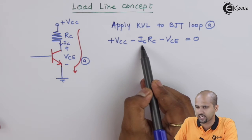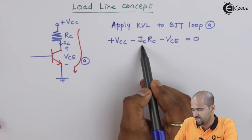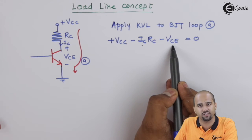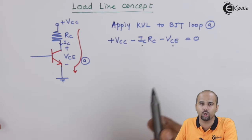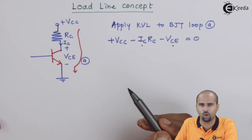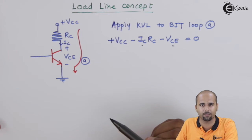The Y-axis for the output characteristics is IC, and the X-axis for the output characteristics is VCE. So we will write the equation of the line in the form Y = MX + C.